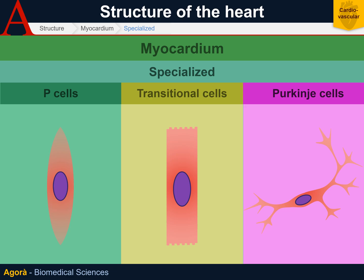Located in the periphery of the nodes, the T cells or transitional cells have features similar to those of the myocardiocytes. They are elongated and do have myofilaments, although not enough for the striations to be observed under the optical microscope.